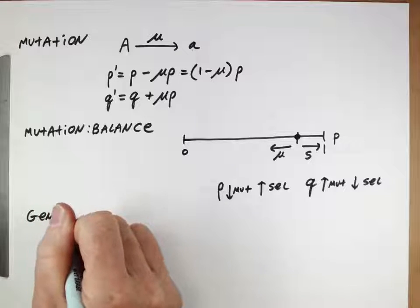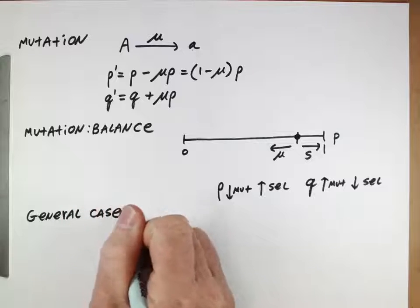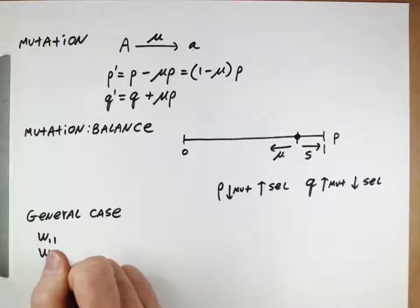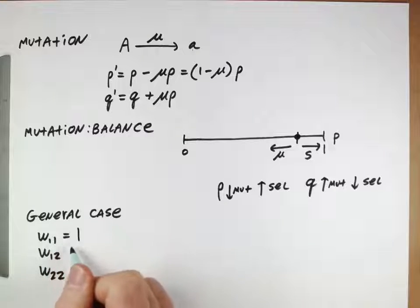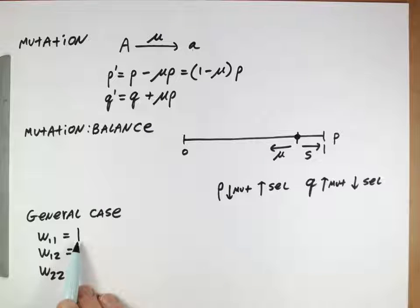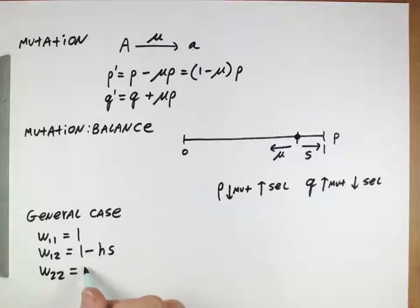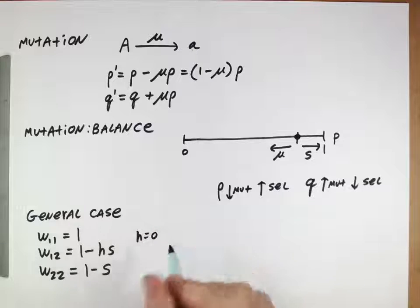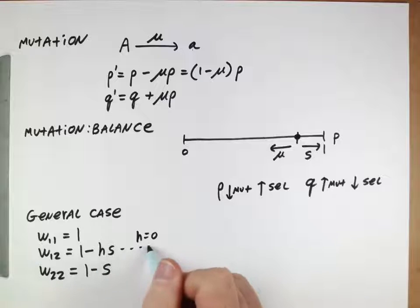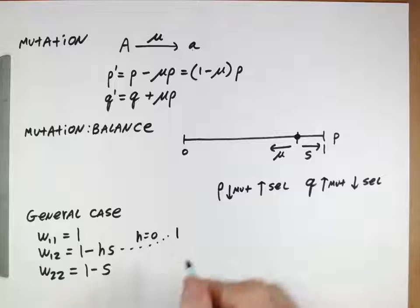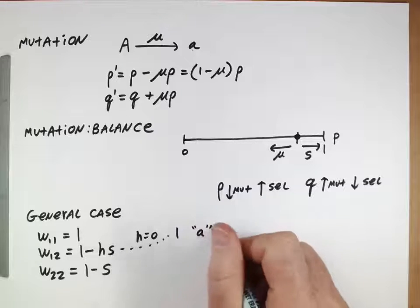So we'll be looking at a general case. We're going to be interested in fitnesses of the following type. The wild type fitness will be one, the capital A homozygote. The heterozygote here will have a reduced fitness, and then this homozygote will have a fully reduced fitness. This value h represents how dominant or recessive the deleterious allele is.